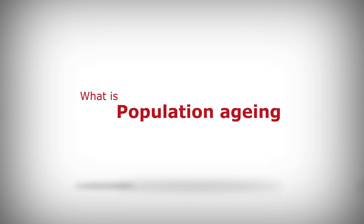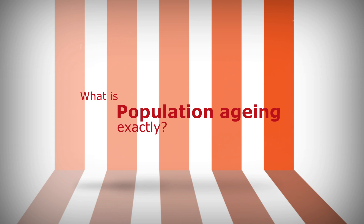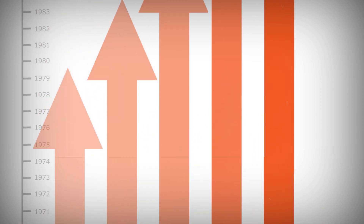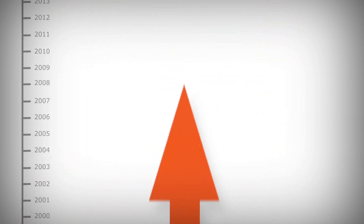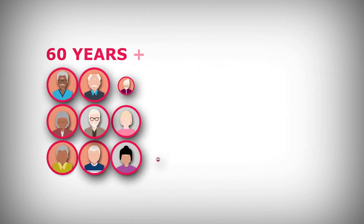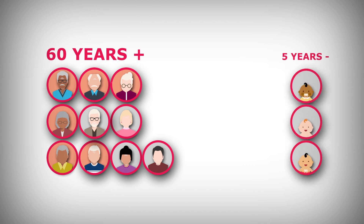What is population ageing exactly? Population ageing refers to the demographic phenomenon where the proportion of older people in a population increases over time. In 2020, the number of people aged 60 years and older outnumbered children younger than 5 years.